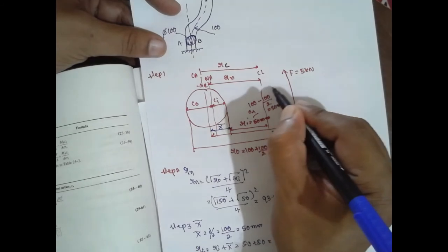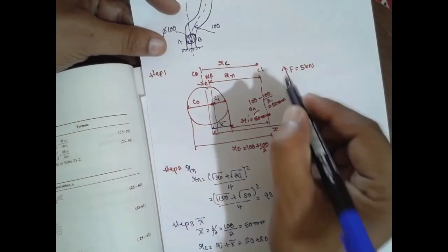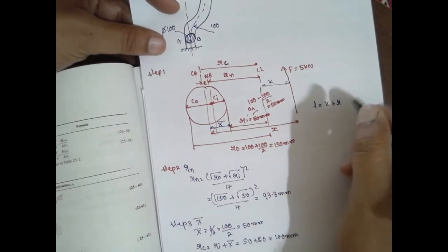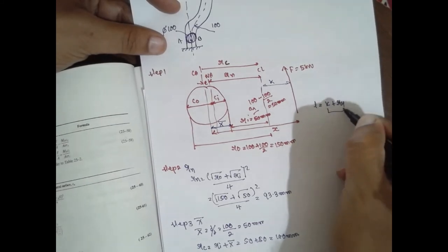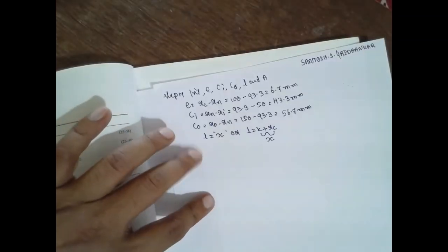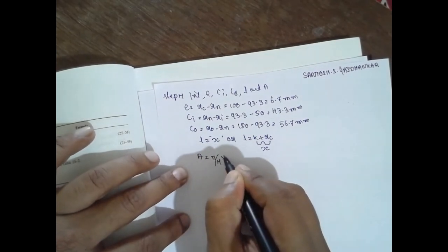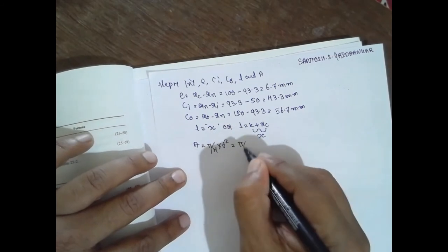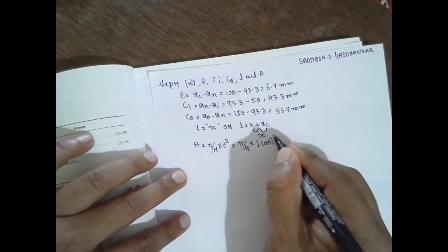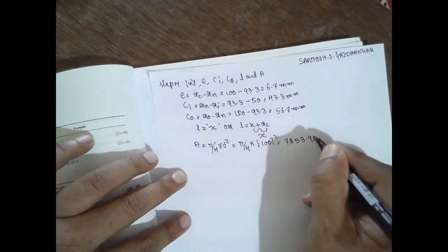Consider this as x, k, this is k, k plus. Consider this is k and it can be done as l is equal to k plus rc. The combination is nothing but x. How directly you can write: l is equal to x. A will be π/4 into d². π/4 into d² is nothing but 100 whole square. The answer would be 7853.98 mm².